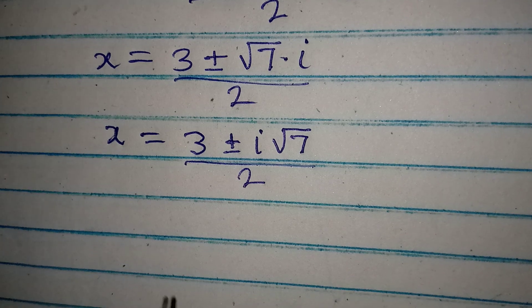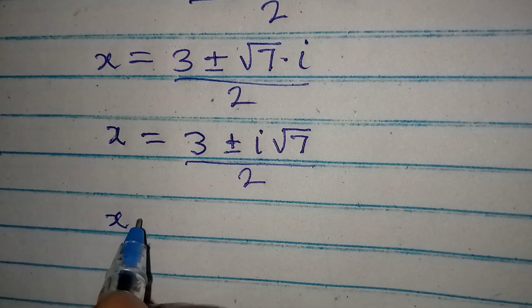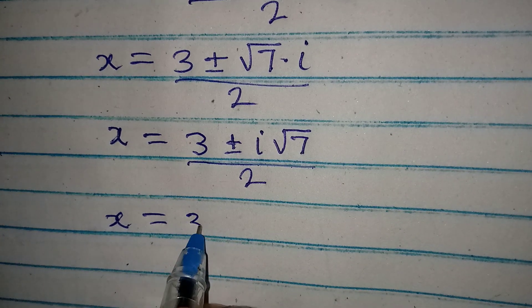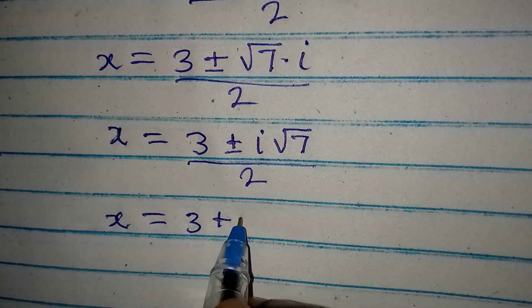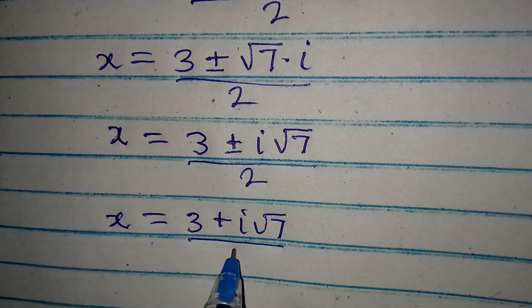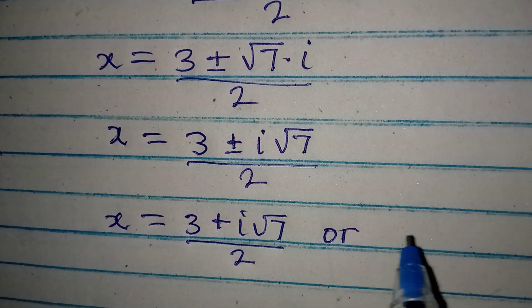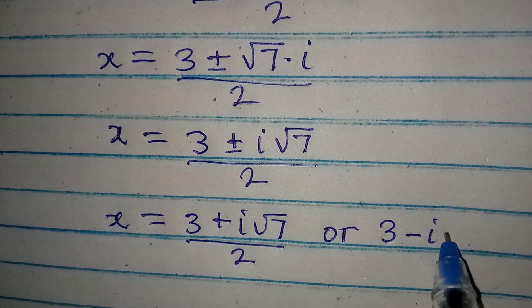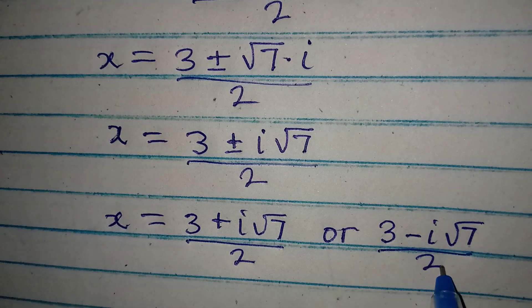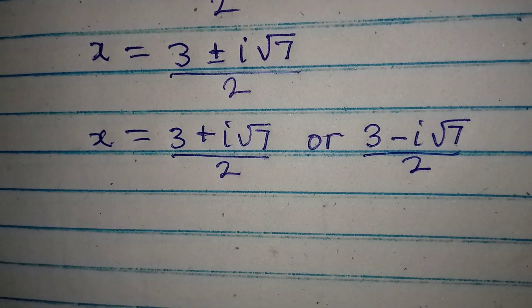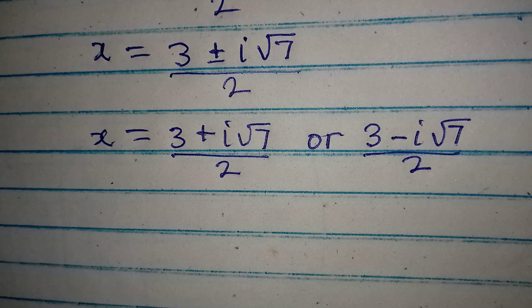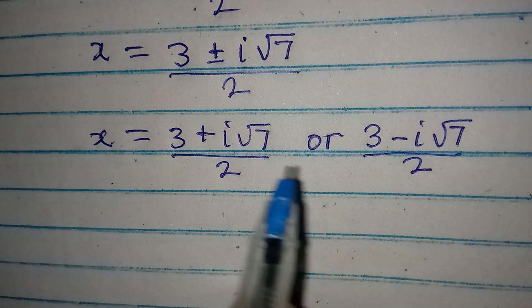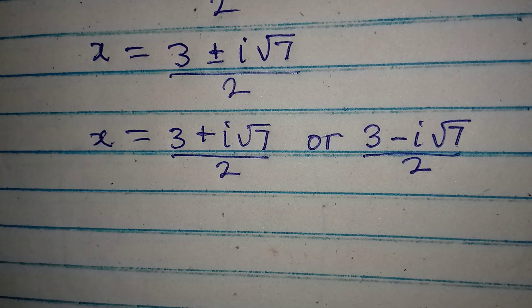This means that the value of x is either 3 plus i root 7 over 2, or 3 minus i root 7 over 2. So these are the two possible values of x, but mind you, both of them are complex solutions. Thank you for watching.